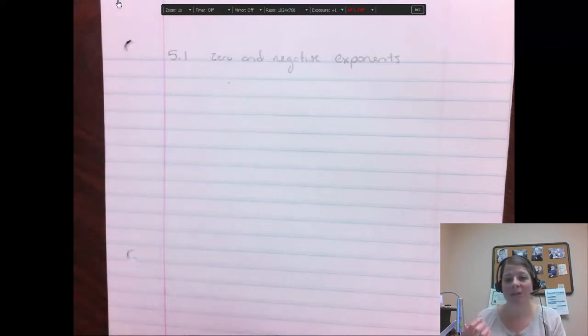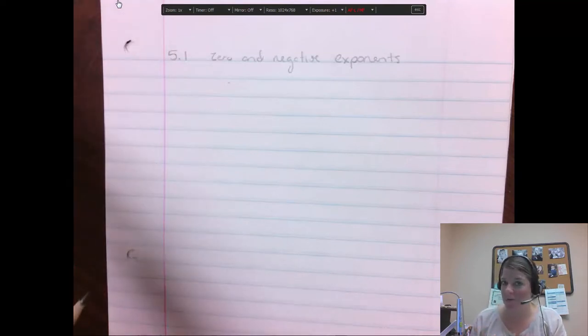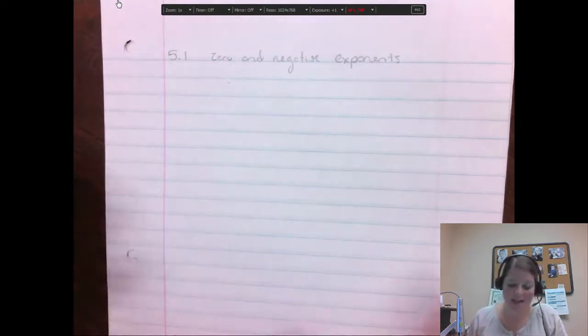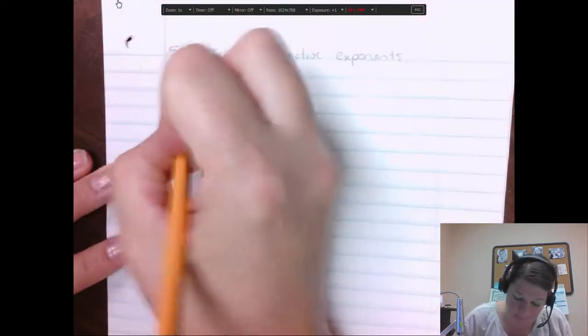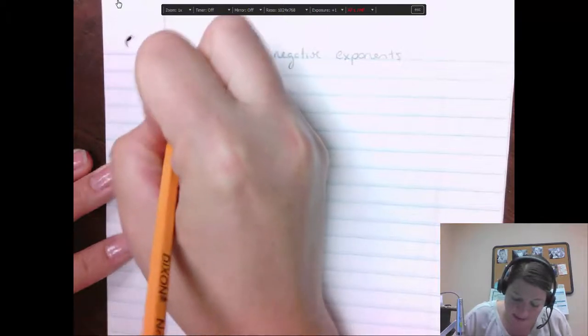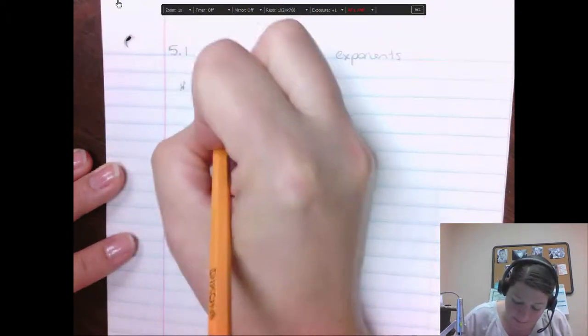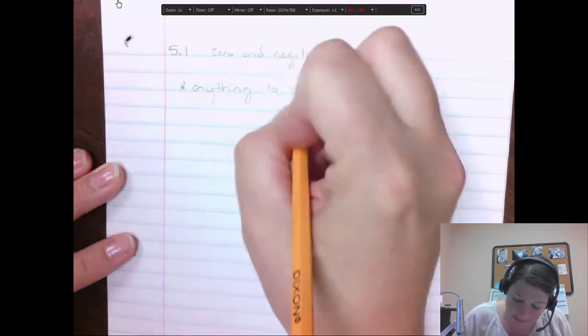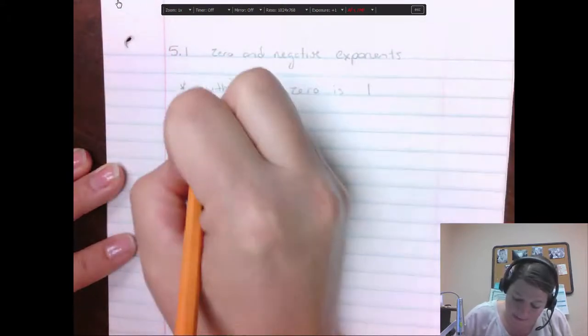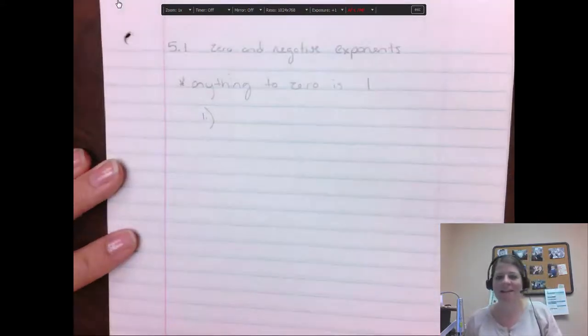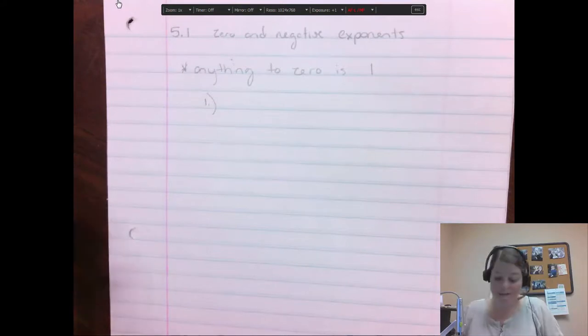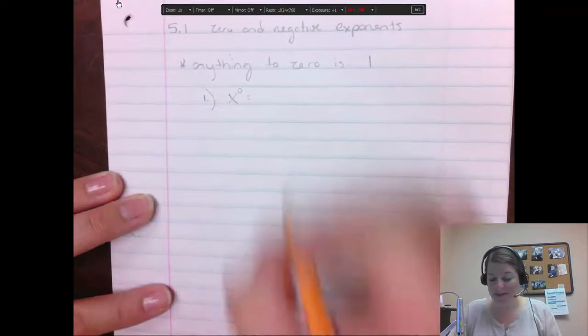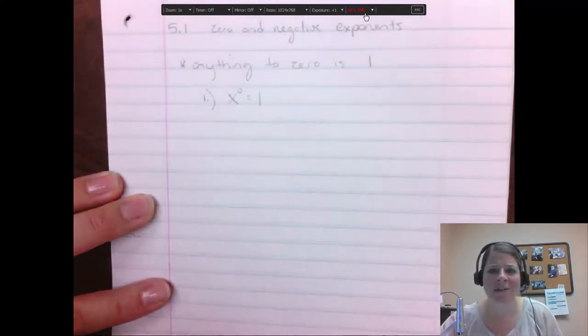Well, if we follow the rules of subtracting the exponents, then you'd get a 0, which makes the answer still going to become a 1. That's kind of the idea of where this 0 exponent rule comes from. So really, it's anything to the 0 is 1. And let me give you some examples of what I mean by anything to the 0 power is 1. So let's say we just have x to the 0 power. That just is going to equal 1. Okay, so that's our rule.